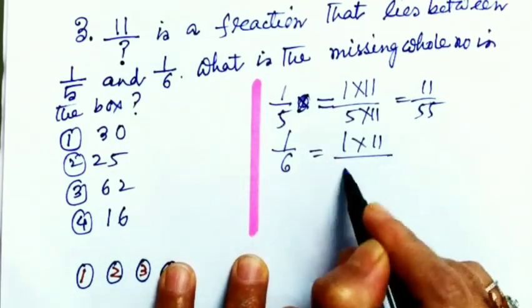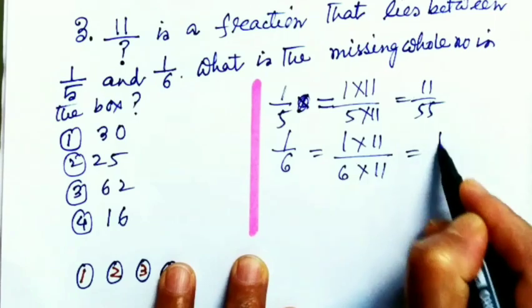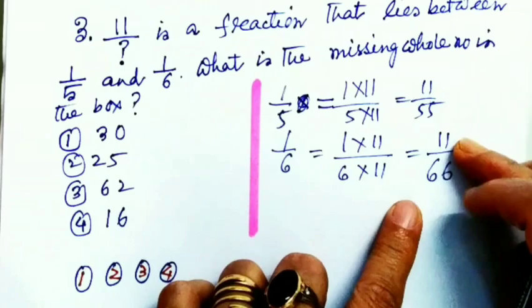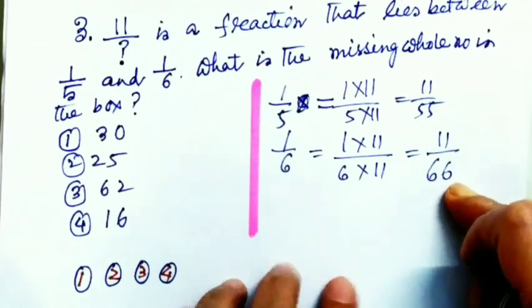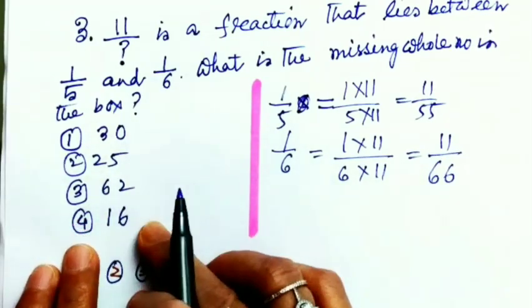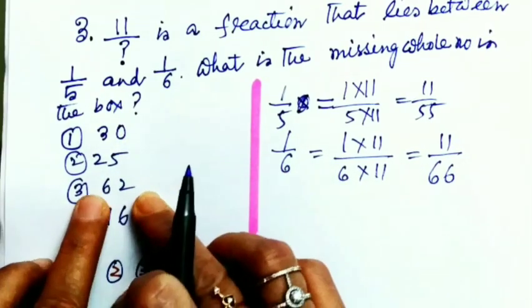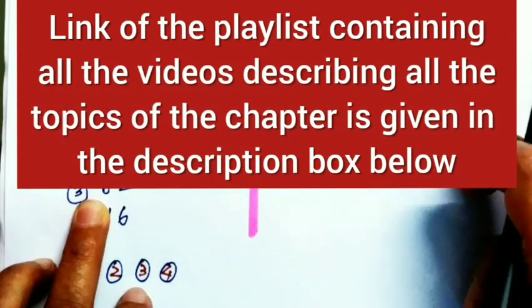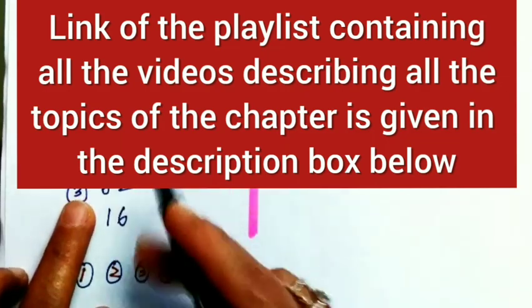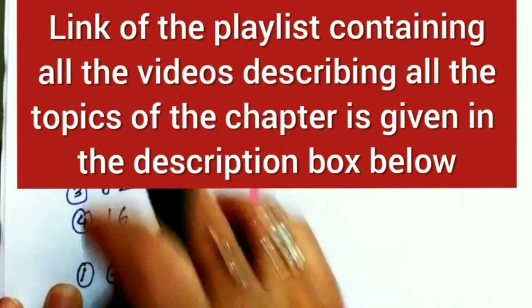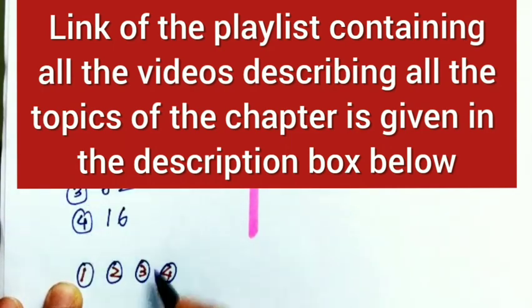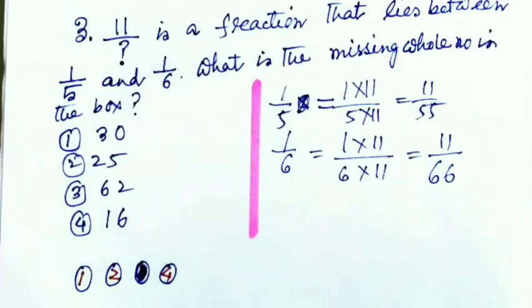So we have found the fractions with numerator as 11: 11/55, 11/66. And in the middle of that, which number will be there? I can find out easily. You see, 62 is in the middle of 11/55 and 11/66. So that means in the missing place, 62 will be there. So our correct option will be 3.